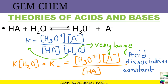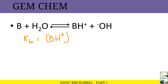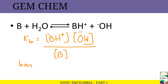Now for the case of a base. A base can accept a proton, so the base B accepts a proton to produce BH⁺ and OH⁻. Similar to before, we ignore the water term and get the base dissociation constant: Kb = [BH⁺][OH⁻] / [B].